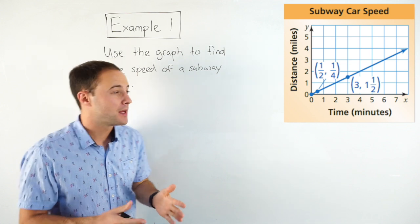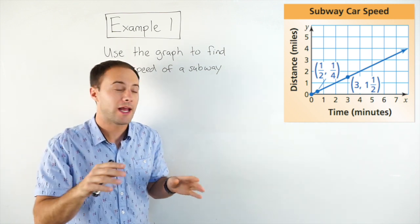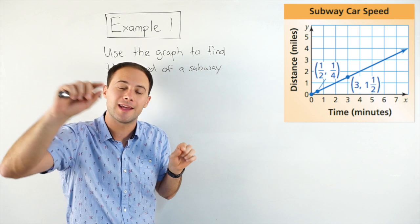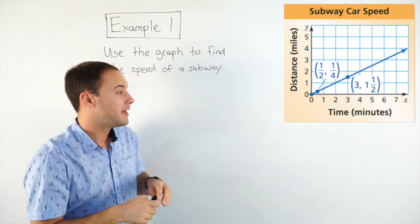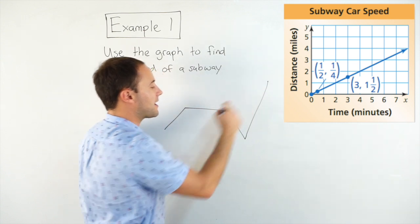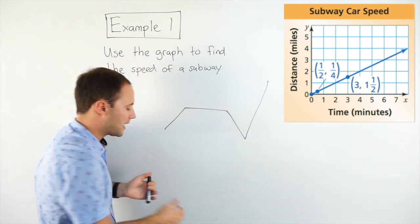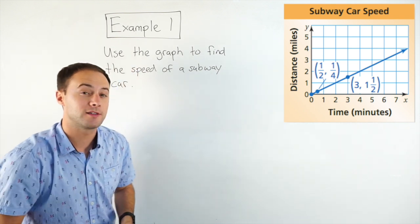Now what that means, that line is showing the speed. And because it's a straight line, it means the speed is constant. The speed is not changing. If the line was like this, and then like this, and then like this, and then like that, then the speed is changing all the time. But because it's a straight line, it means that that speed is constant.